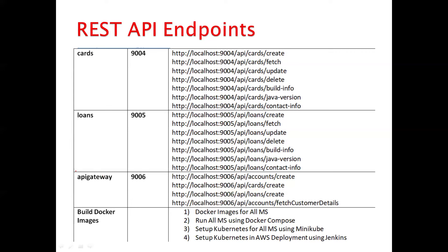The API gateway is the single entry point — no one can access the network without going through the gateway. Cards and loans are accessible only through the gateway in Kubernetes as well. For building Docker images, there are two ways: using a Dockerfile or using Google Jib. We'll also cover Docker Compose for running microservices locally and setting up Kubernetes using Minikube.